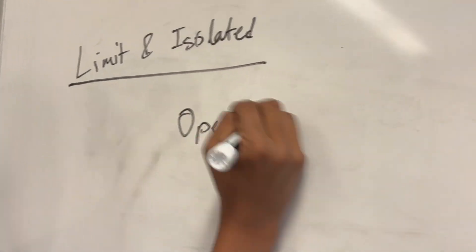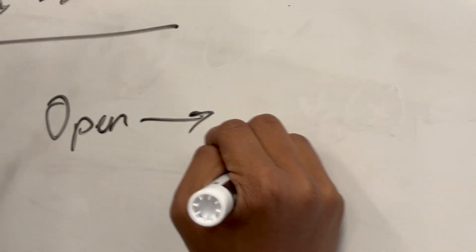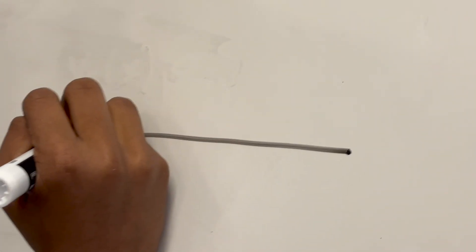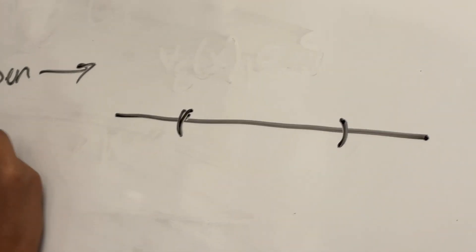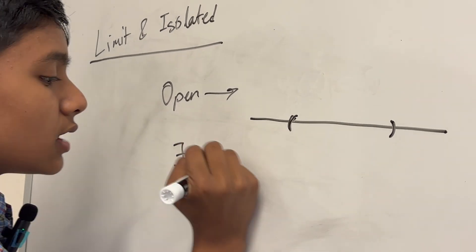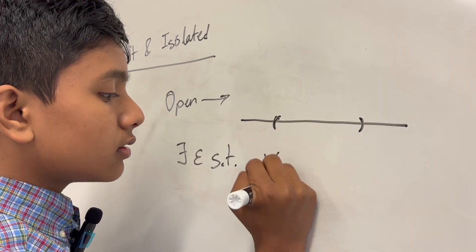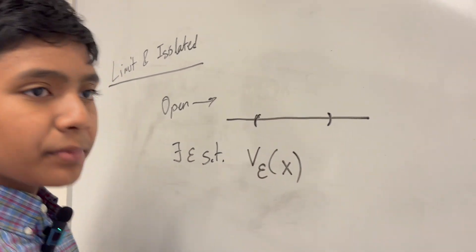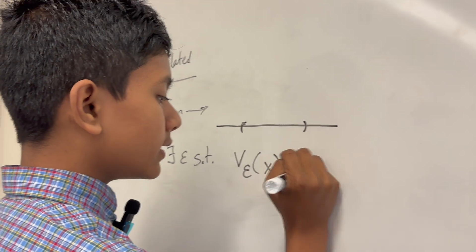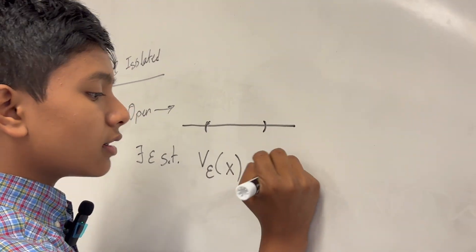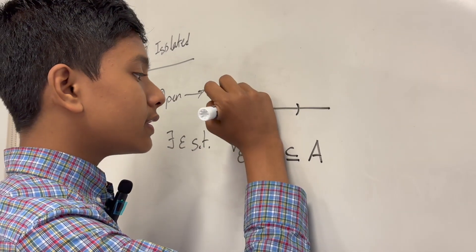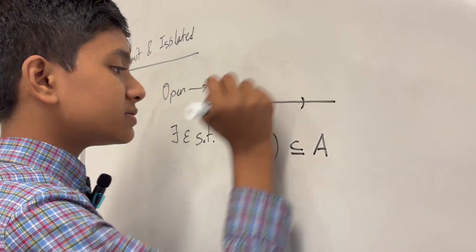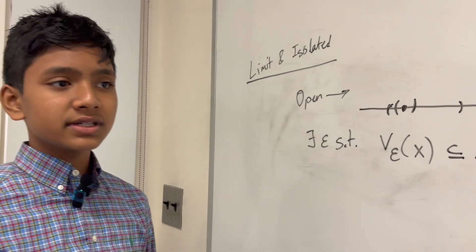An open set, as we discussed a while ago, is just a set such that for every single point in our set — like for example over here — there exists an epsilon such that the epsilon neighborhood of that point is a subset of our set. So for example this point right over here, there exists this epsilon specifically where it's a complete subset.